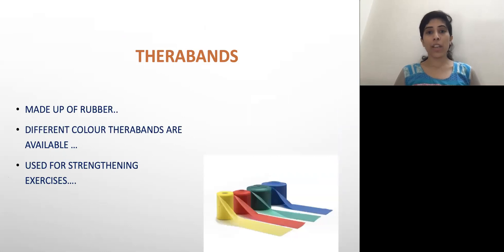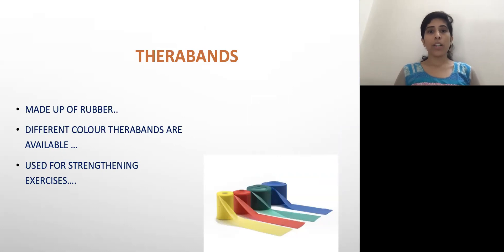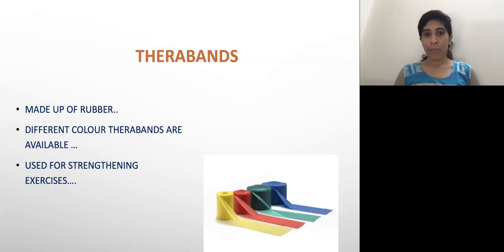Therabands. Various shapes and colors of Therabands are available. Each color has its own resistance, providing different levels of resistance. They are mainly made up of rubber material and are used for strengthening exercises of various parts of the body. They are very convenient for the patient to carry anywhere and perform exercises independently once learned properly.